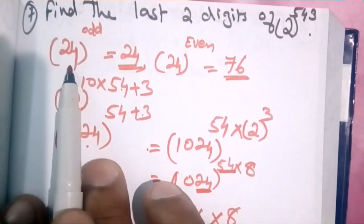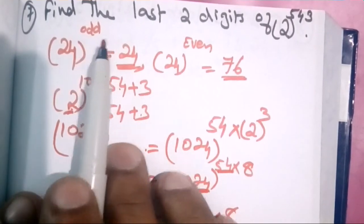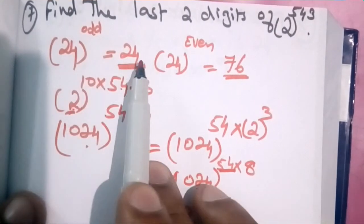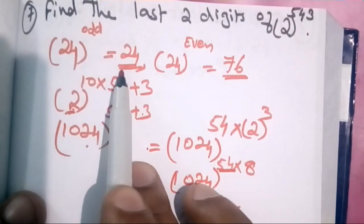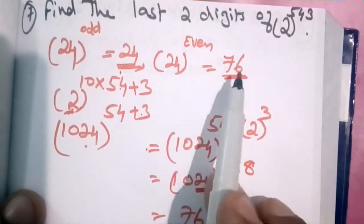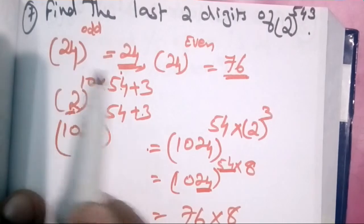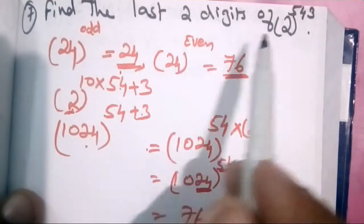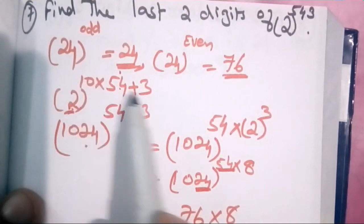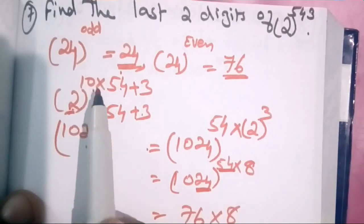24 is a special number. One number is 1, 3, 5, 7, 9. The last two figures are 24, the even number is 24, and the last two digits are 76. So we can do this. This is 2 raised to 543, equal to 2 raised to 10 times 54 plus 3, and 2 raised to 10 is 54.